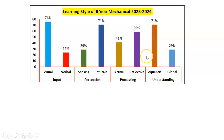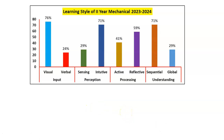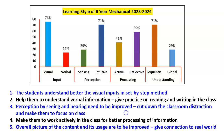Looking at the diagram, visual, intuitive and sequential are the strengths of this group of learners, while they are very poor in verbal understanding, sensing type of learning, active type of learning, and global type of learning. So what do we do with this data? We have to change our teaching methodology a little bit so that it will benefit the students. Based on the observation, students understand better with visual input and the step-by-step method.